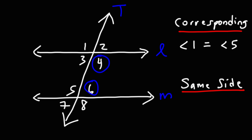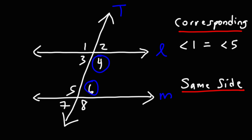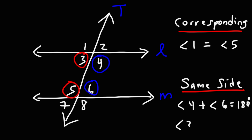Angles 4 and 6 are on the inside of the two parallel lines, and they're on the same side of the transversal. What you need to know about same-side interior angles is that they are supplementary. So angle 4 and angle 6 add up to 180 degrees — they don't equal each other, but they add up to 180. The same is true for angles 3 and 5; they're same-side interior angles, so they're supplementary and add up to 180.